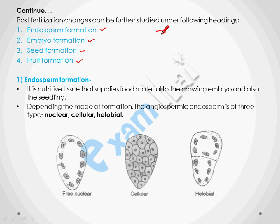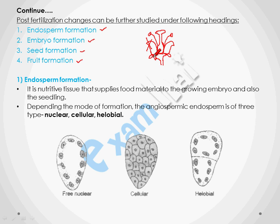As discussed in our previous video about double fertilization in angiosperms, here I am going to continue with the post-fertilization changes. After fertilization — the fusion of the male gamete with the egg cell and the polar nuclei — this is the diagram of a bisexual flower. The petals, sepals, stamen, stigma, and style all fall off, and only the post-fertilization changes occur in the ovarian part of the flower. So first we will discuss endosperm formation.